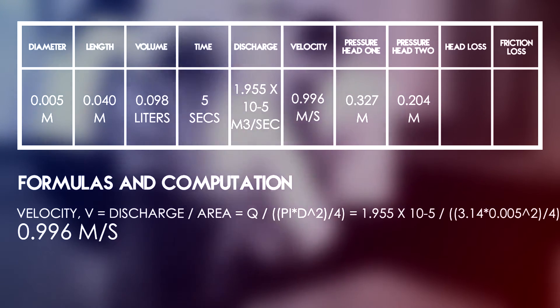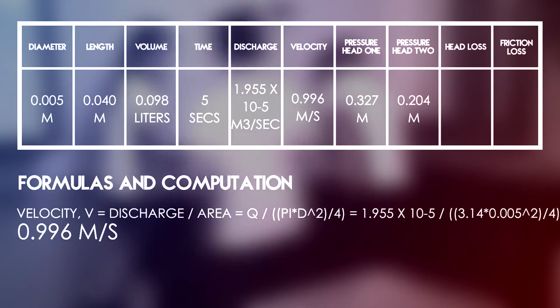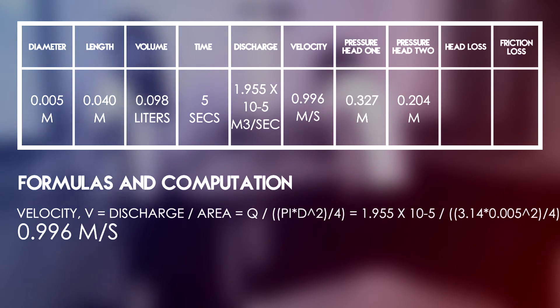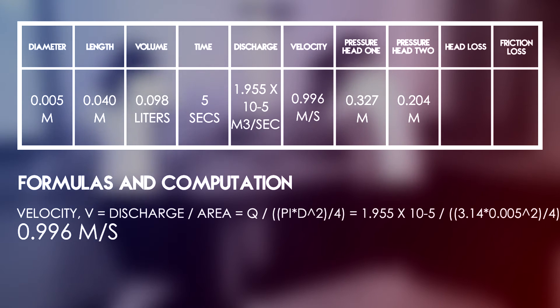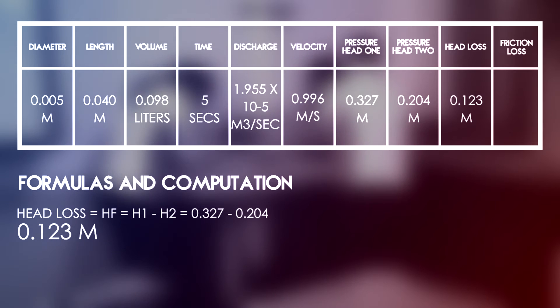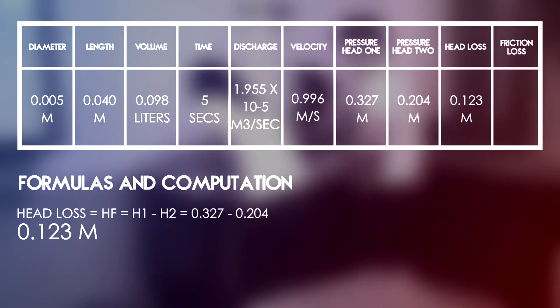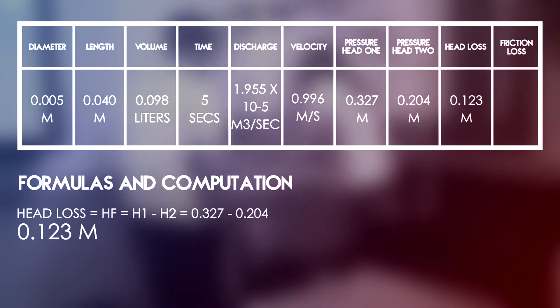So V equals 1.955 times 10 raised to negative 3 over pi over 4 times 0.005 squared, which equals 0.996 meters per second. HF is simply the difference of H1 and H2. So HF equals 0.327 minus 0.204 and is equal to 0.123.